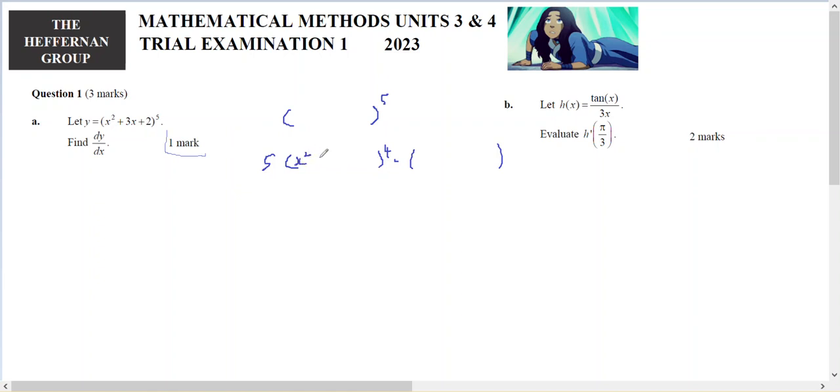So x squared plus 3x plus 2. Then dy/dx will equal 5 times that to the power of 4.